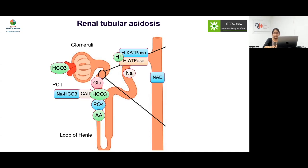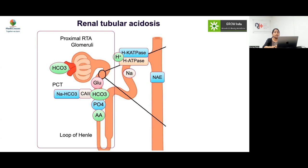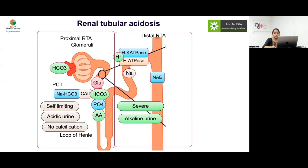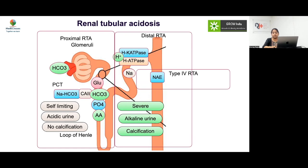Acquired causes include mesenchymal tumors, melanocytic nevus syndrome, and epidermal nevus, which produce FGF-23 from tumor cells causing hyperphosphaturic rickets. In renal tubular acidosis: proximal RTA involves abnormal bicarbonate reabsorption — when serum bicarbonate falls very low, filtration stops, causing acidic urine; it is self-limiting with no nephrocalcinosis. Distal RTA has a defect in urine acidification, is more severe with fractures, alkaline urine, and nephrocalcinosis. Type 4 RTA (hyperkalemic) does not cause rickets.